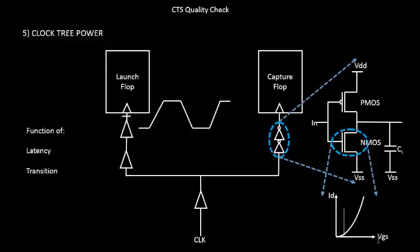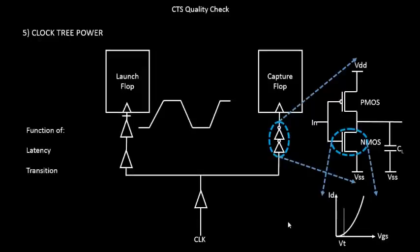If you look into the current and voltage characteristics of any device, NMOS or PMOS, you see something like this. This is the current, this is the voltage, and this particular line is referred to as Threshold Voltage, which is VT. Your current increases after VT only.